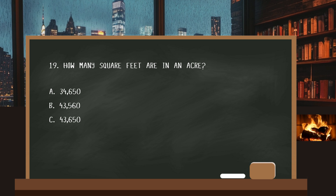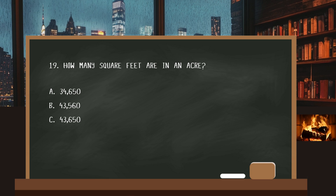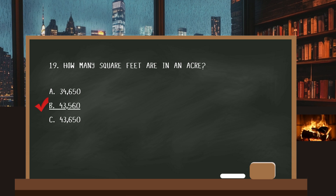Number nineteen. How many square feet are in an acre? The answer is B: 43,560.